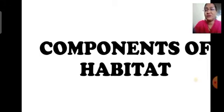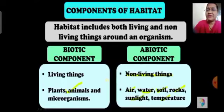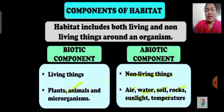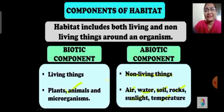Let's study about the components of habitat. Any habitat, terrestrial or aquatic, is made up of living and non-living things. Living beings in a habitat — that is, plants, animals, and microorganisms — make up the biotic components of habitat. The non-living things like air, water, soil, light, and temperature constitute the abiotic components of habitat.